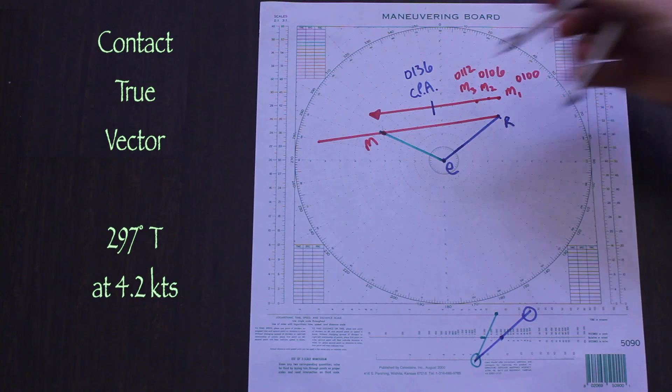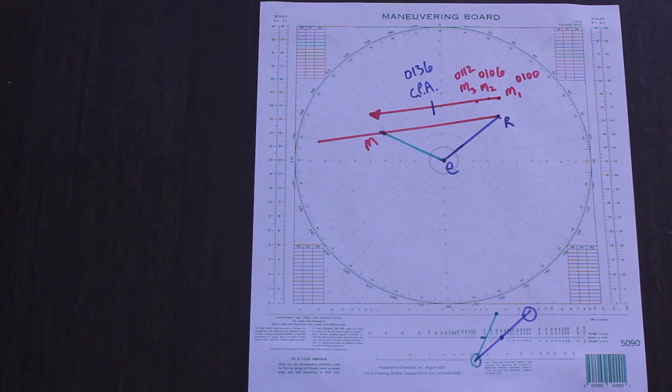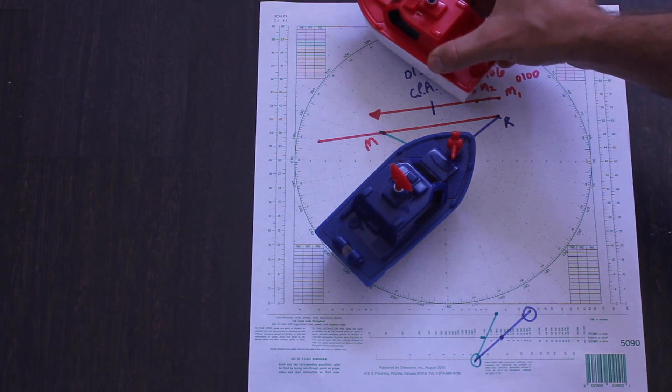Now, we not only know where the contact is and where it's going relative to us, we know its true course and speed, so we can determine its orientation and apply the rules of the road. In this case, there is no risk of collision, so we're good to go.